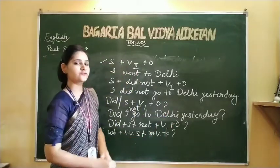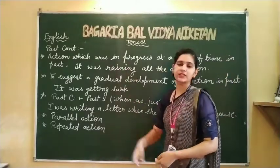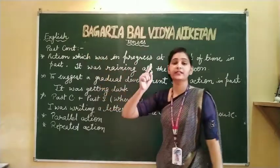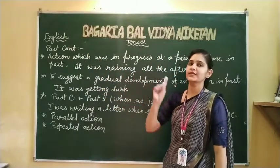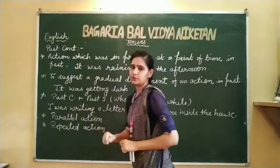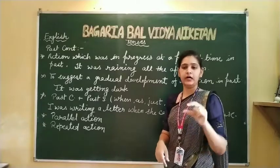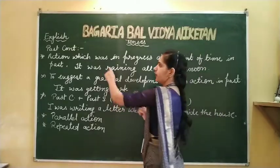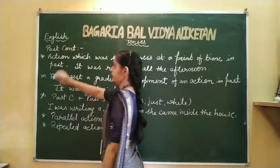WH word के लिए: पहले WH word लिखो, फिर helping verb, फिर subject, फिर main verb, फिर object, फिर question mark। इस तरीके से sentences form होते हैं। The next type of past is past continuous। जैसे present continuous present में काम की continuity show करता था, वैसे ही past continuous past की continuity — यानि कोई काम चल रहा था — वो show करता है।